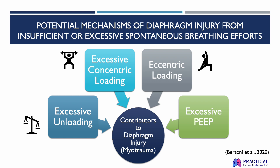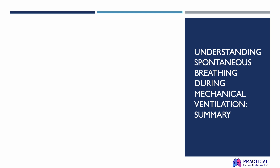Next is eccentric loading, which is when the diaphragm muscle generates contraction while lengthening instead of shortening. Examples include low PEEP and excessive low tidal volume, causing the diaphragm to contract as it lengthens during the expiratory phase to avoid atelectasis. There is also dyssynchrony, such as reverse triggering, short cycling, and ineffective effort, causing eccentric contractions because the diaphragm is activated during the expiratory phase, which could cause acute diaphragm weakness. Lastly, excessive PEEP may cause sarcomeres to drop out of the muscle and shorten its length.